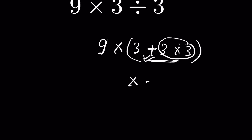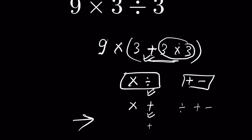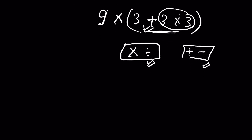The left-to-right rule is taken between multiplication and division, and between addition and subtraction. When it comes to a choice between multiplication and addition, multiplication always takes precedence over addition. Division also always has precedence over addition or subtraction, just as multiplication always has precedence over addition and subtraction. So the left-to-right choice only applies within the group of multiplication and division, and within the group of addition and subtraction.